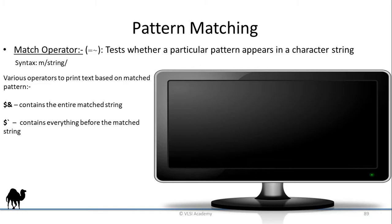Dollar apostrophe ($') — which is the opposite direction of the backtick — will contain everything after the matched string, giving you everything that is present after the match. These operators come very handy when writing code.